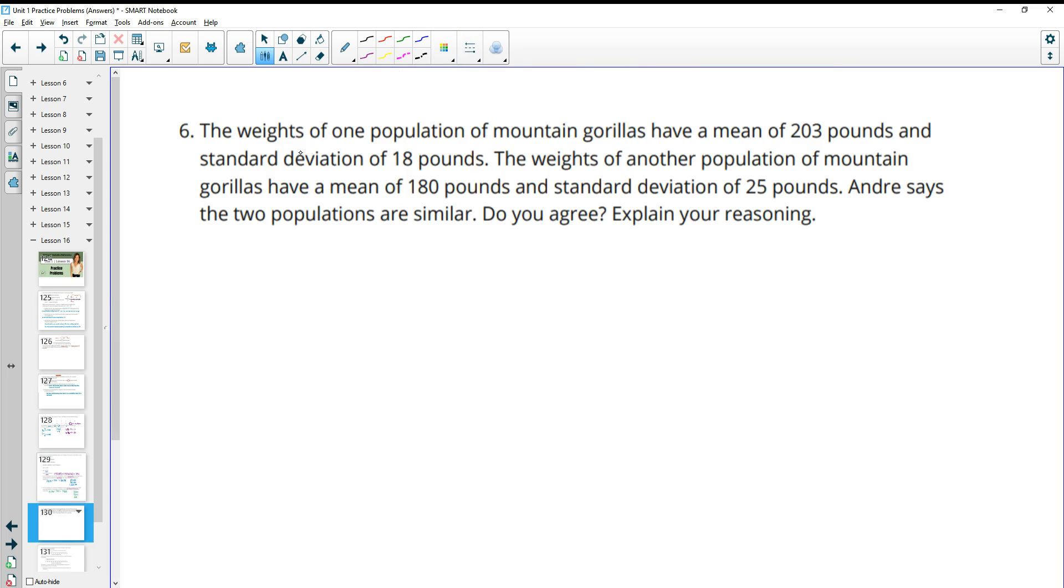Number 6, the weights of one population of mountain gorillas have a mean of 203 pounds and a standard deviation of 18. The weights of another population of mountain gorilla have a mean of 180 and a standard deviation of 25. I think you could probably go either way on this, that you could agree with him, and I think you could get some data to back that. And I think you could say maybe you don't agree. And I think you could have some justification for that. So this really depends on how you look at it.